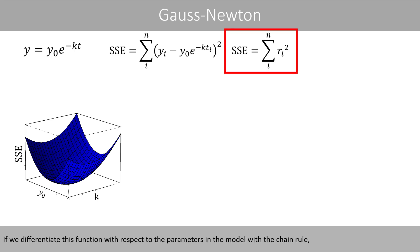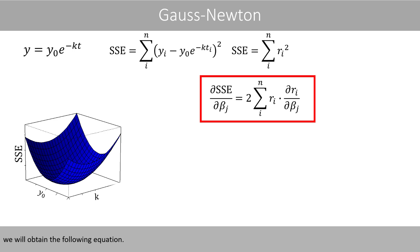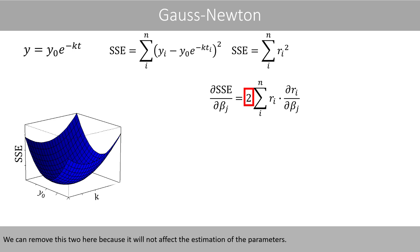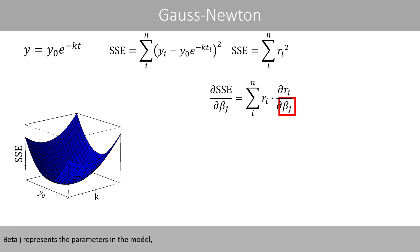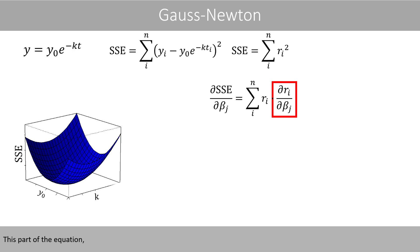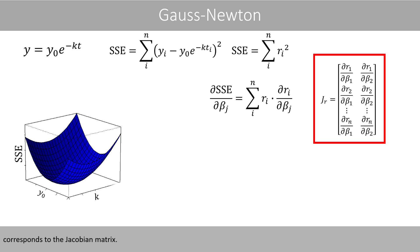If we differentiate this function with respect to the parameters in the model using the chain rule, we obtain the gradient equation. We can remove the factor of two, as it will not affect the estimation of the parameters. Beta-j represents the parameters in the model — k and y0 in our example — and this part of the equation corresponds to the Jacobian matrix.